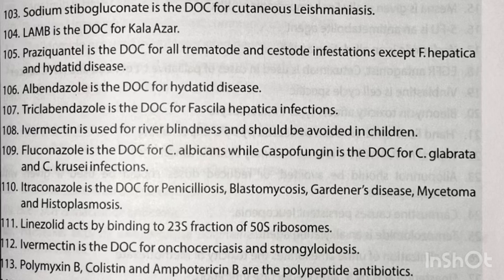Itraconazole is the drug of choice for penicilliosis, blastomycosis, Gardner's disease, mycetoma and histoplasmosis. Linezolid acts by binding to the 23S fraction of the 50S ribosome. Ivermectin is the drug of choice for onchocerciasis and strongyloidiasis. Polymyxin B, colistin and amphotericin B are polypeptide antibiotics. Tetracyclines act by binding to 30S ribosomes and inhibit aminoacyl-tRNA binding.